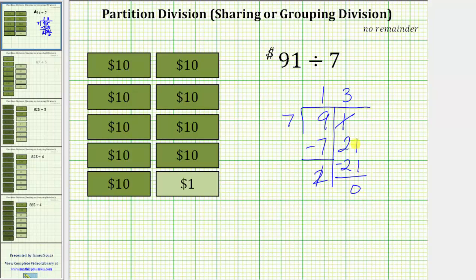And we now know each of the seven friends can receive exactly $13. And therefore the quotient 91 divided by seven equals 13. I hope you found this helpful.